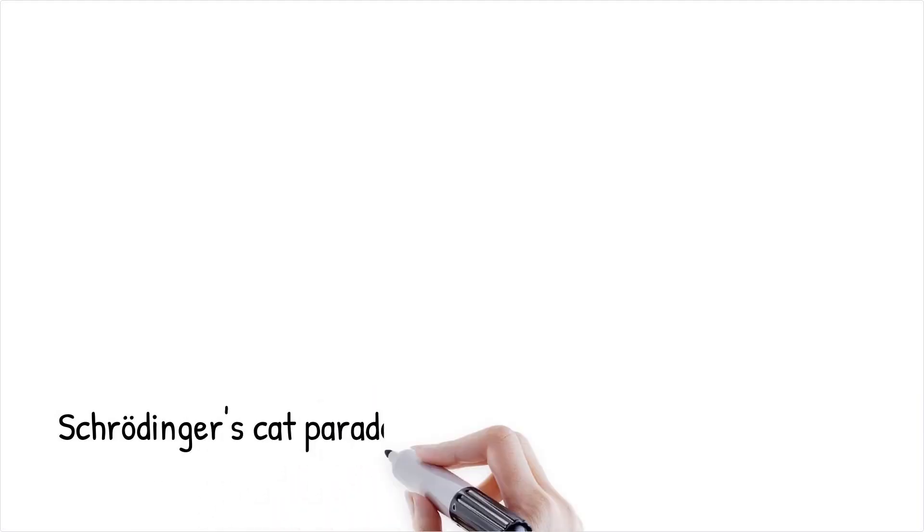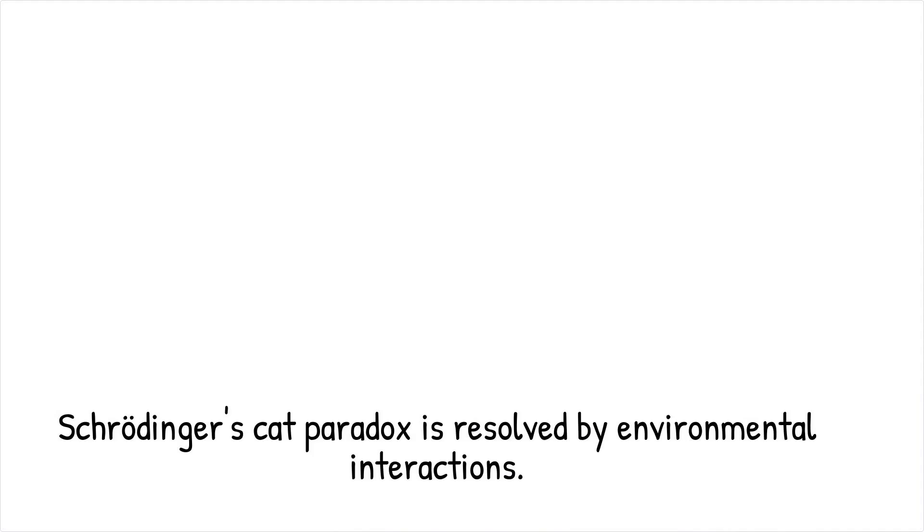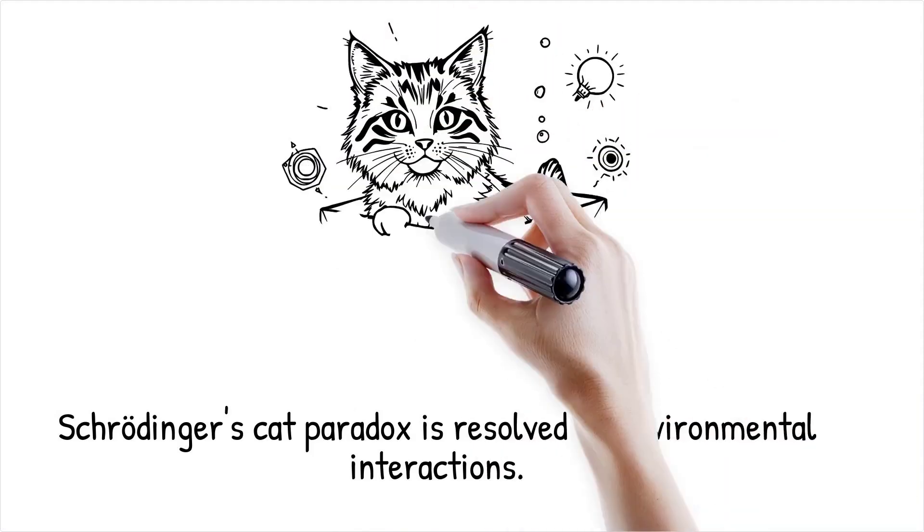Example: The paradox of Schrodinger's cat is resolved. The cat's state—alive or dead—interacts with the environment, redundantly encoding the outcome. Observers tapping into this encoded information will see the same reality.